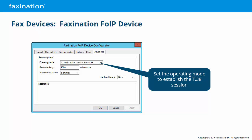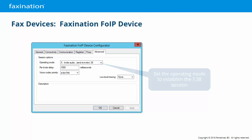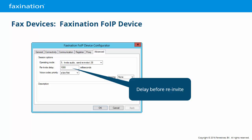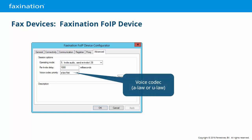Re-invite delay: when the operating mode includes a re-invite, this is how long we wait before sending it — the default is 1 second. You can set the voice codec priority: A-law is common in Europe, U-law is common in North America and Japan, and the rest of the world uses a mix of the two. If we're having interoperability issues in a particular environment, we typically start with Wireshark logs and a trace log of the device connector. If we need even more information, we can enable a low-level trace in standard mode or extensive mode — these should be enabled temporarily and only for troubleshooting, as they can negatively impact server performance.